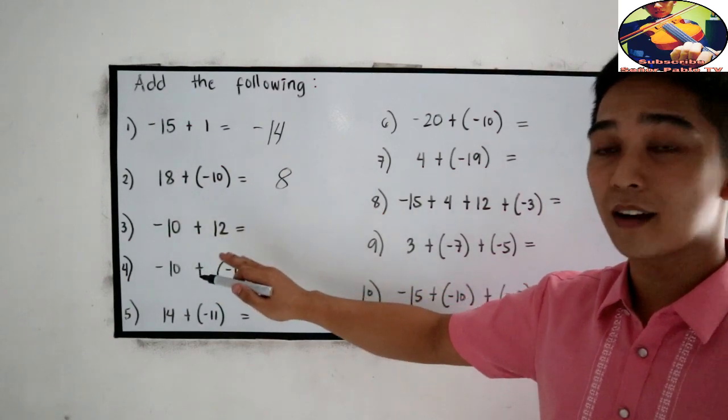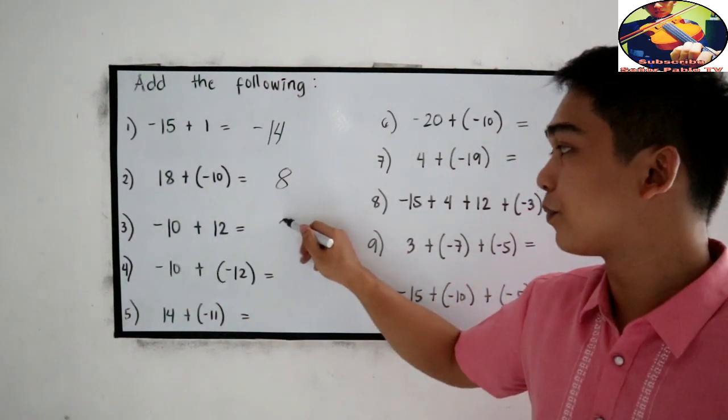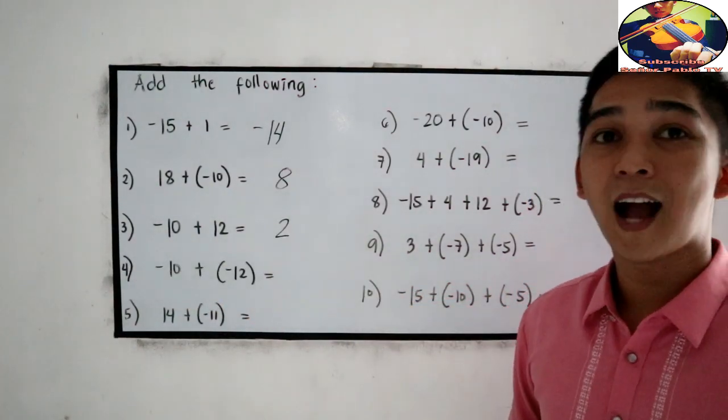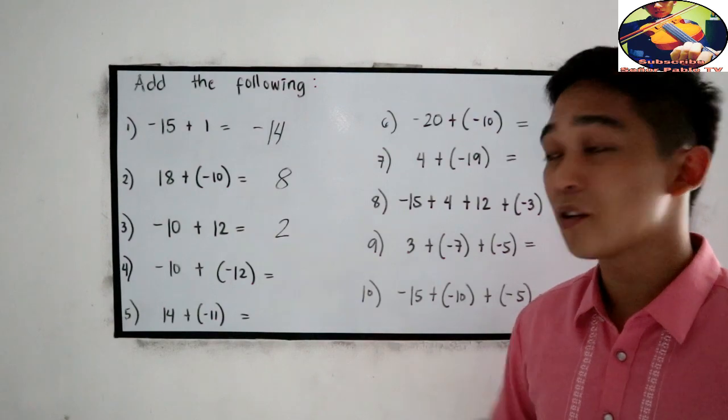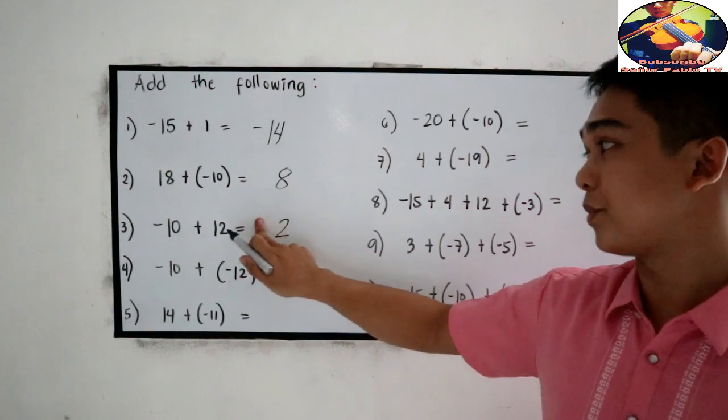Number 3: Negative 10 plus 12. Unlike signs, subtract. 12 minus 10. That is 2. Copy the sign of the bigger absolute value. So positive 12, so positive 2. Or simply 2.